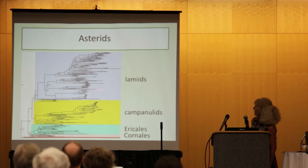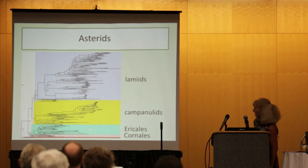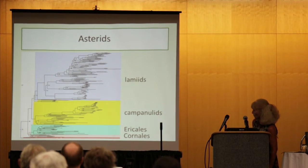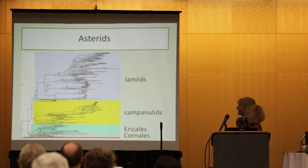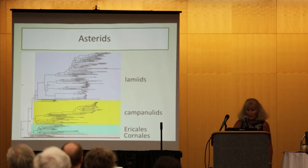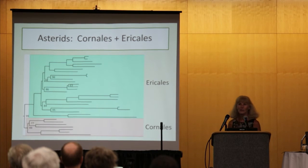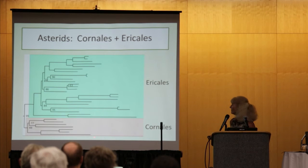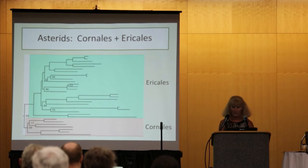Within the Asterids, we see the major clades we would expect: the Lamiids, the Campanulids, although with some non-monophyly, and Ericales and Cornales. The basal group here — the red stripe — represents the Garryales, which are sister to the rest of the Asterids. However, what's unusual is that Ericales and Cornales actually form a clade with 99% bootstrap support, which is unusual as they typically form subsequent sister groups to the core Asterid group of Lamiids and Campanulids.